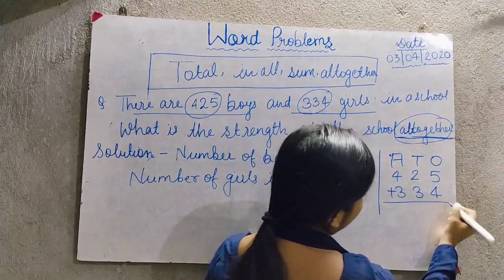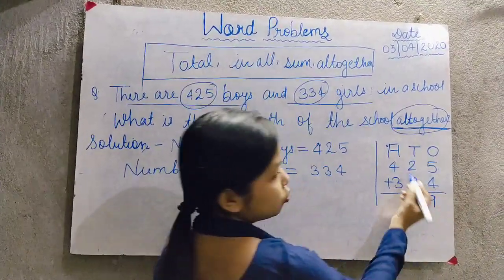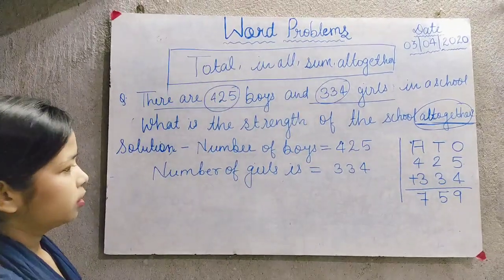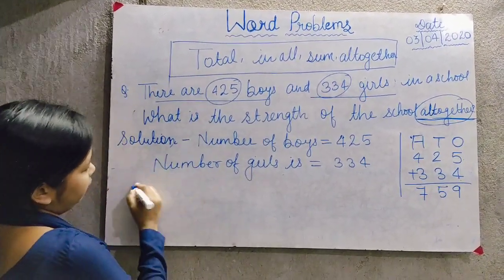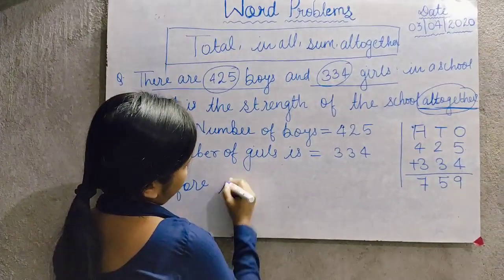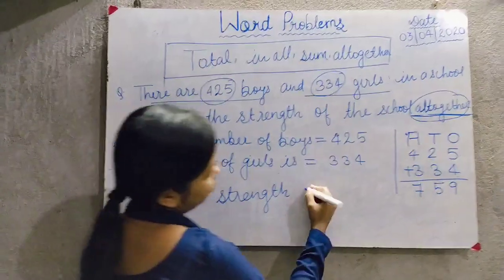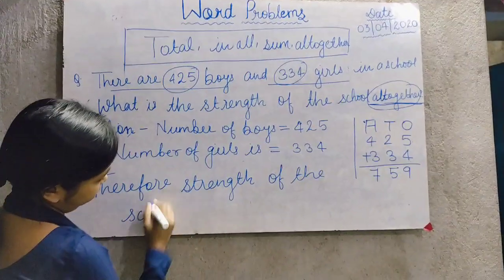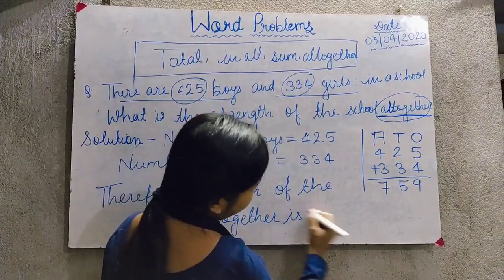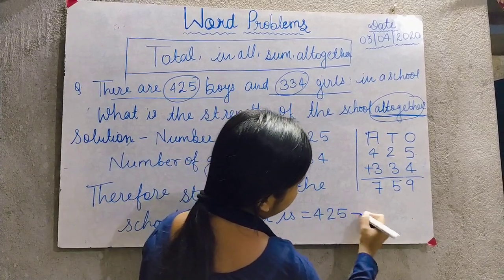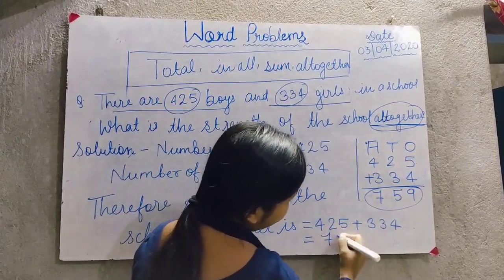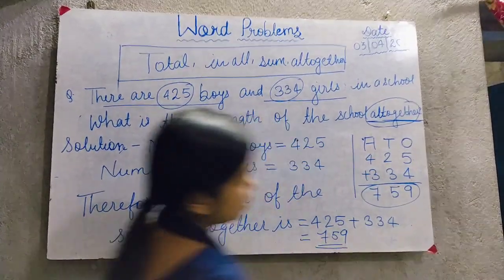Now let's add 425 and 334. 5 plus 4 is equal to 9. 2 plus 3 is equal to 5. 4 plus 3 is equal to 7. Therefore, the strength of the school all together is equal to 425 plus 334, which gives us 759. This is our final answer.